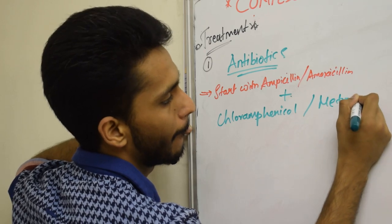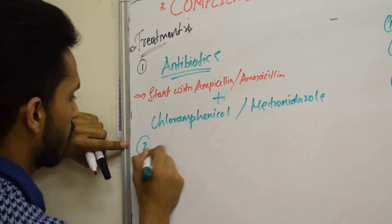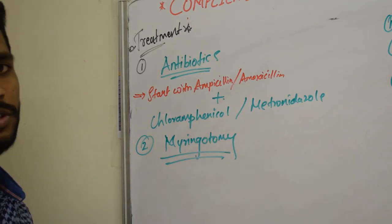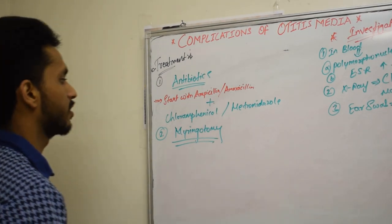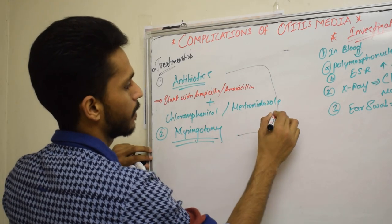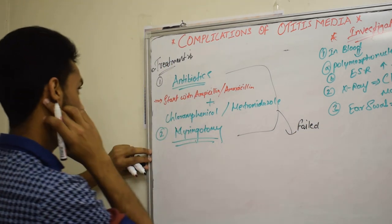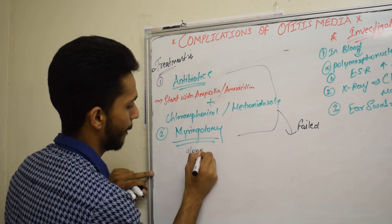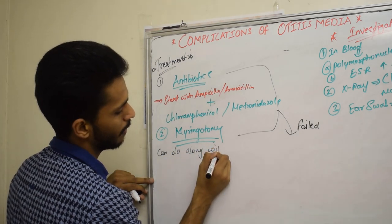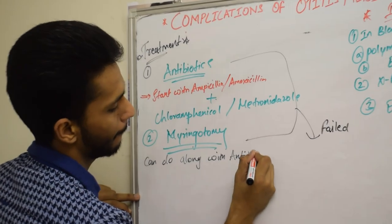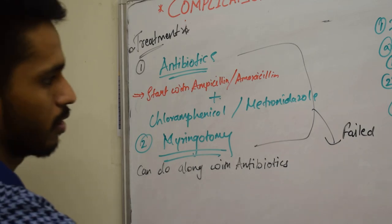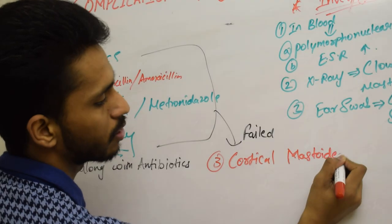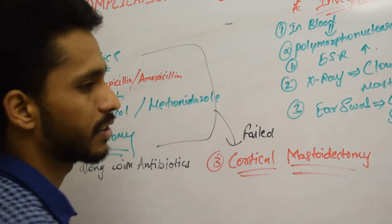Myringotomy can be combined with antibiotics. If both antibiotics and myringotomy fail to provide relief within the expected time frame, we proceed to the third option: cortical mastoidectomy, which involves removal of the mastoid air cells.